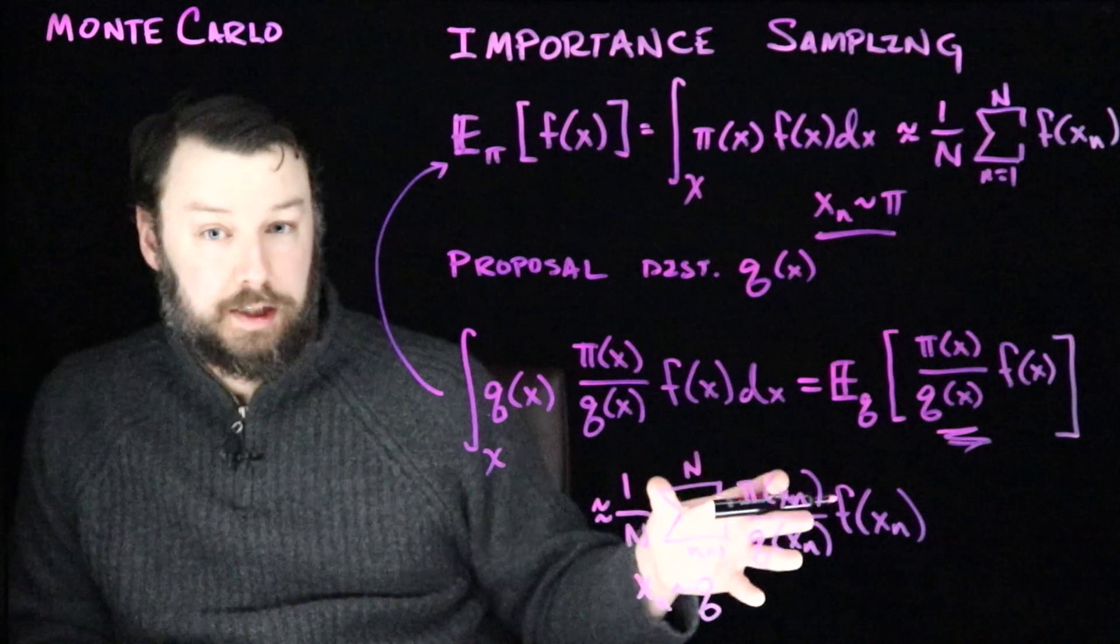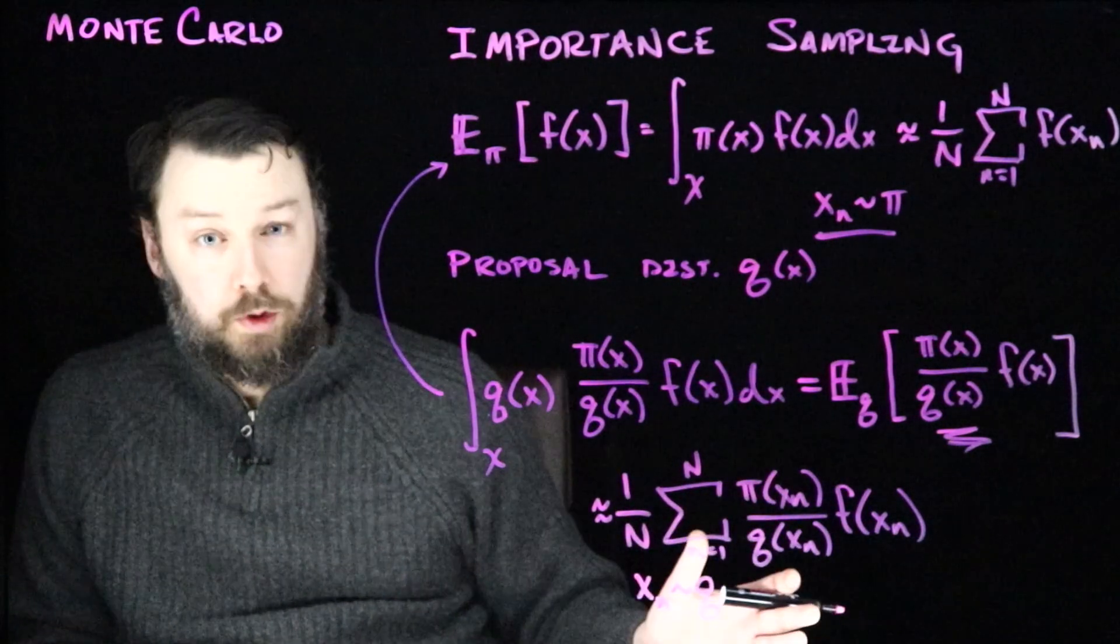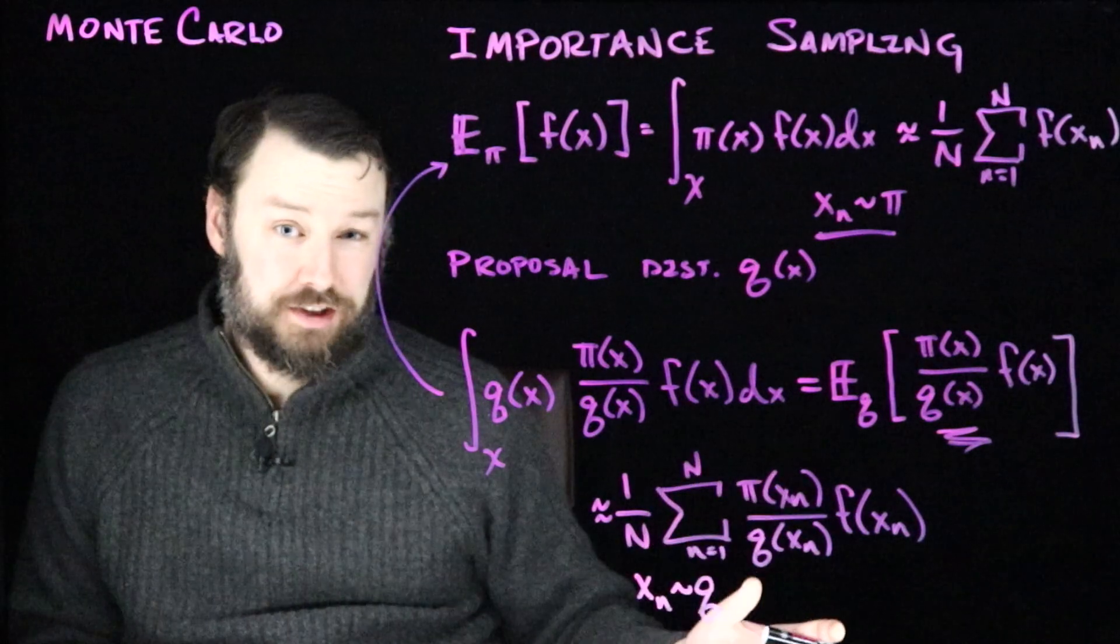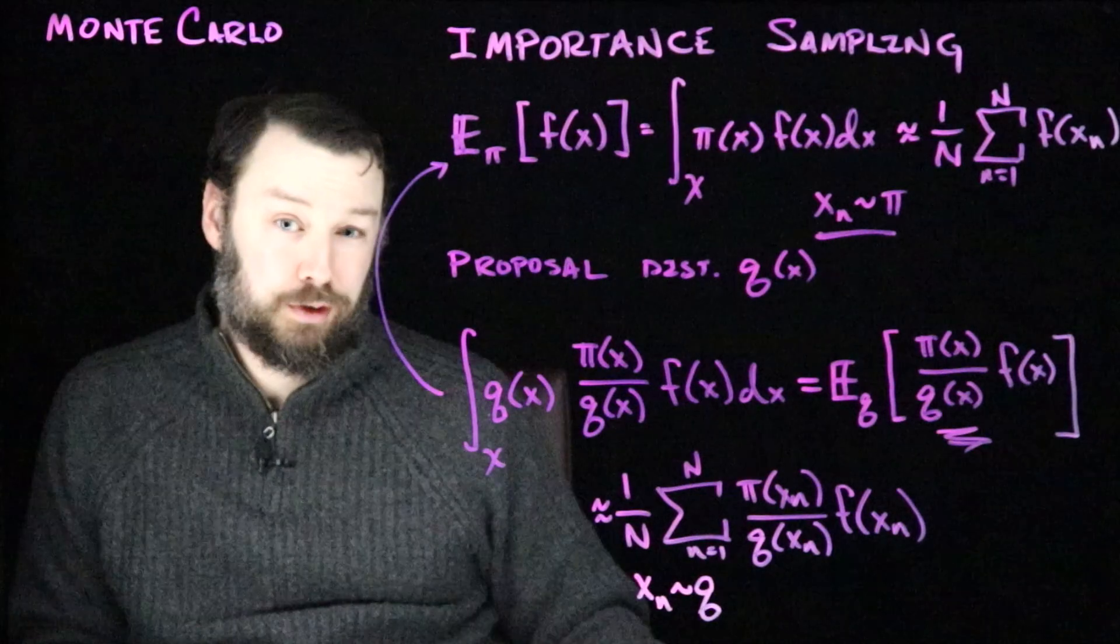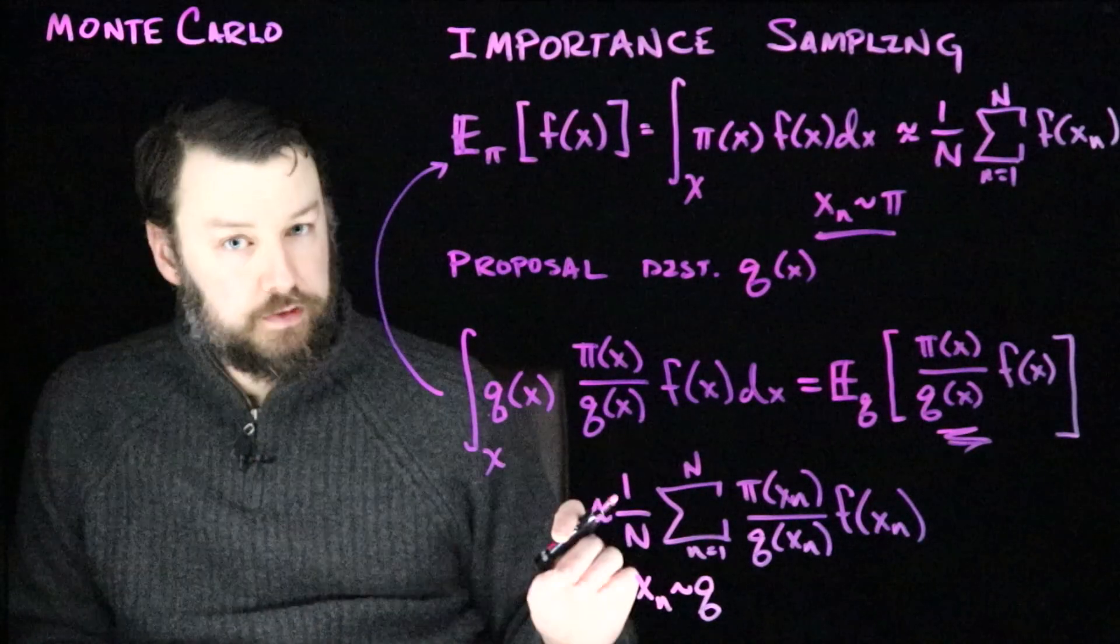So instead of sampling from pi, we can sample from q, and life will be easy. One way to think of this is as kind of rejection sampling, but rather than rejecting things outright and throwing them away, we're down weighting them according to how good of a sample they were from pi.